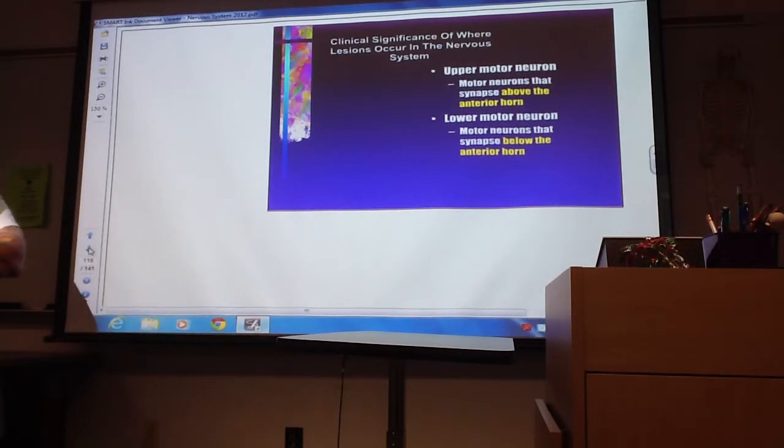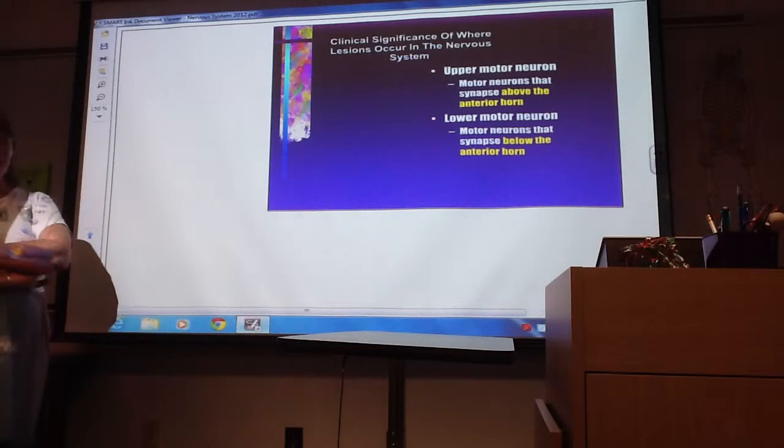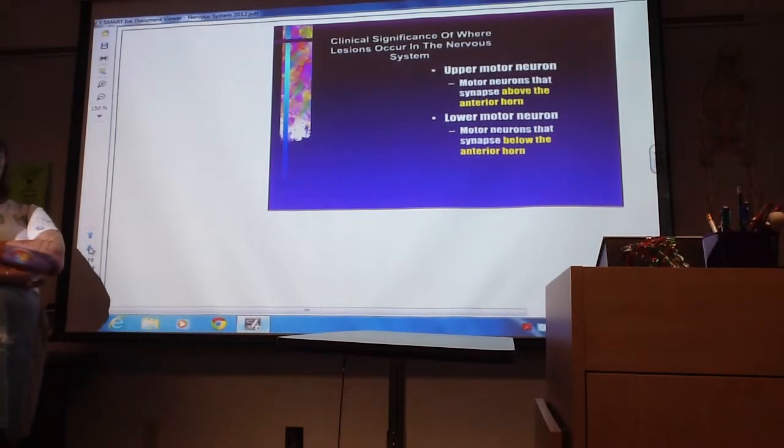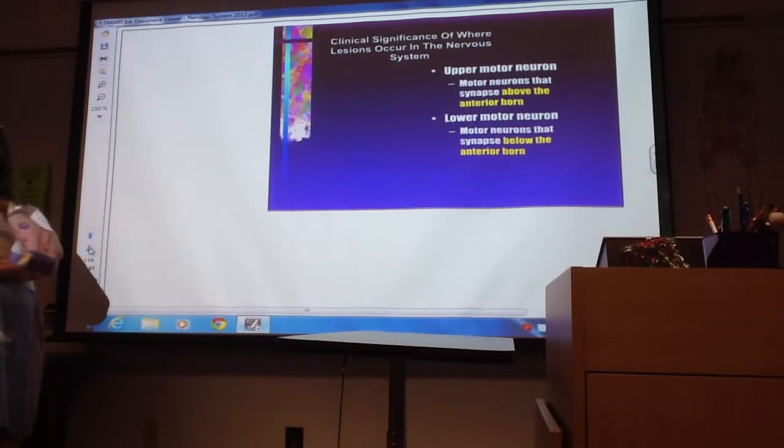The upper motor neurons are the motor neurons that synapse above the anterior horn. The lower motor neurons are the neurons that synapse below the anterior horn. So pretty much what's happening is this upper motor neuron is going to be green and maybe upper part of the spinal cord.